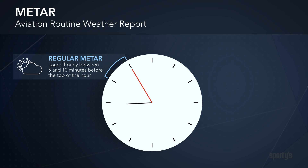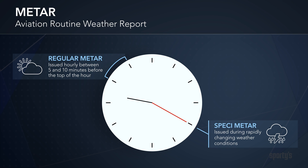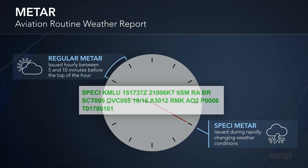METARs are updated hourly, typically around 5 and 10 minutes before the top of the hour. If the weather conditions change significantly before the next scheduled update, a variation of a METAR called a SPECI will be issued with the updated conditions. These can be identified with the code SPECI listed at the beginning of the observation.